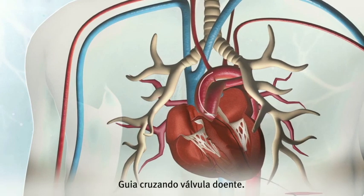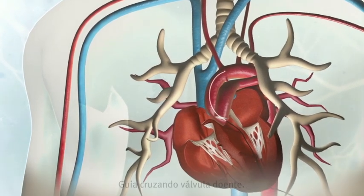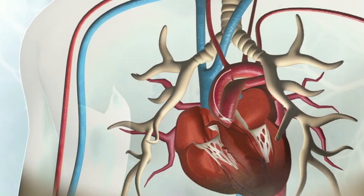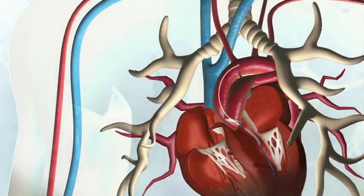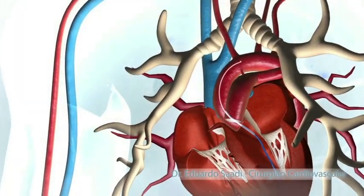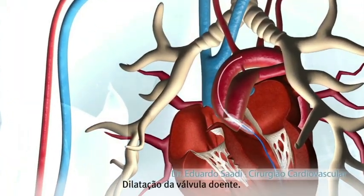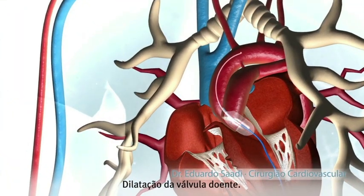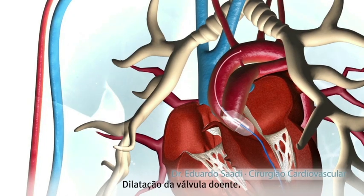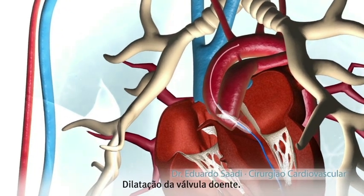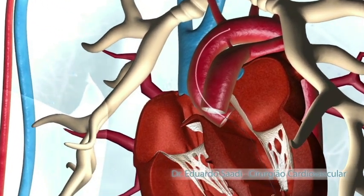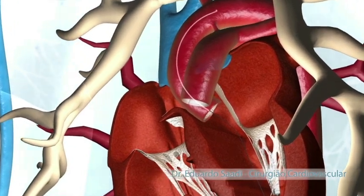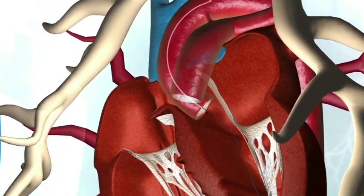Wires and catheters are inserted directly into the heart through its apex. The wire crosses the diseased valve and, in selected cases, the valve is predilated with a balloon.